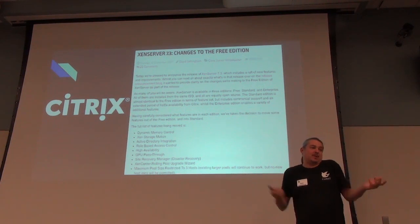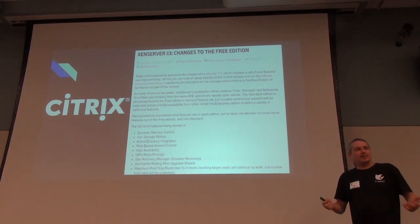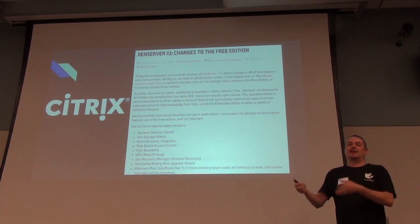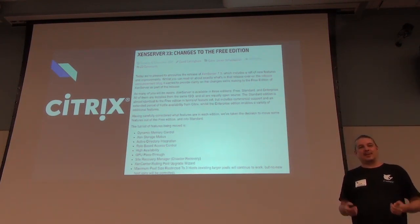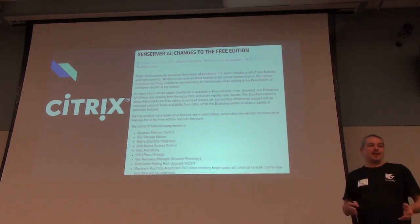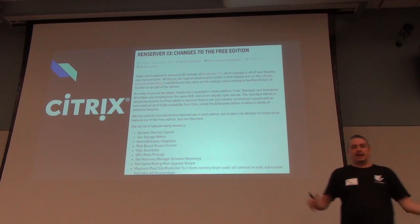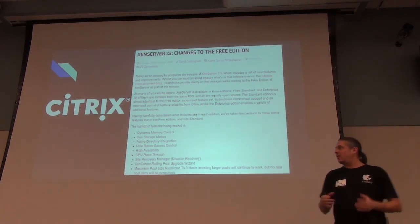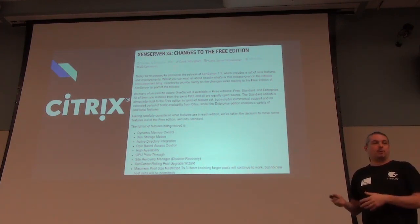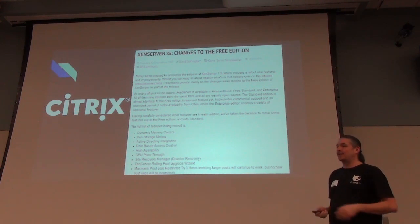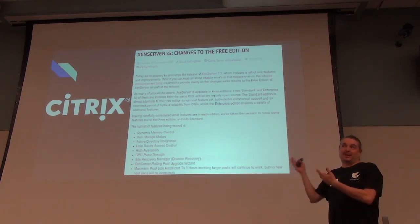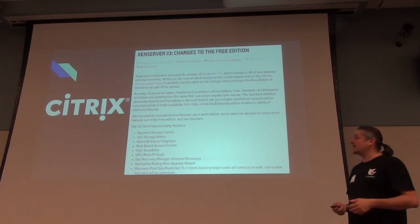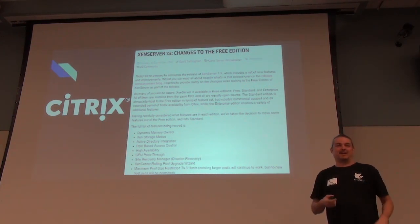What happened was users saw an update from 7.2 to 7.3, applied it, and suddenly features were grayed out requiring paid licenses. On top of that, Citrix substantially increased all their license fees at the same time. This upset the community significantly because Citrix had always been a good contributor to the open source part, and previously you could get a free version and pay only for support.